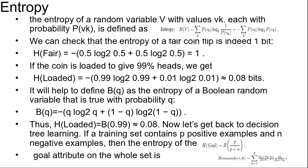We define B(q) as the entropy of a Boolean random variable that is true with probability q. So B(q) equals minus q log2 q plus (1-q) log2 (1-q). Thus, H(Loaded) equals B(0.99) equals 0.08.